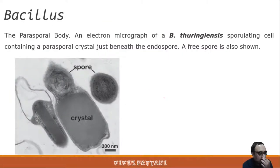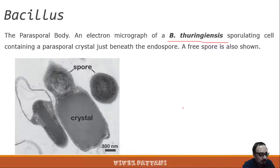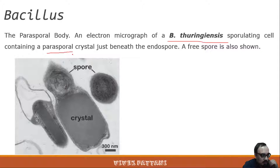This next photograph is of Bacillus thuringiensis, known for its property to kill various insect larvae — you may know it as 'Bt' in short form. The image shows the spores and crystals, which is basically a parasporal crystal beneath the endospore.